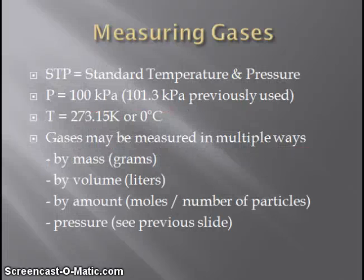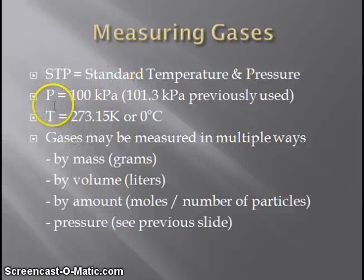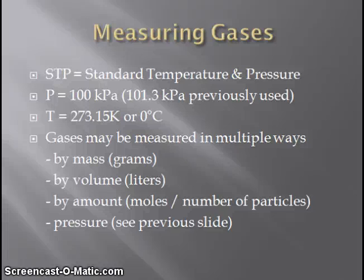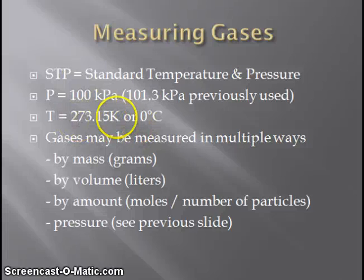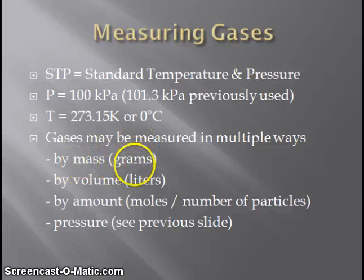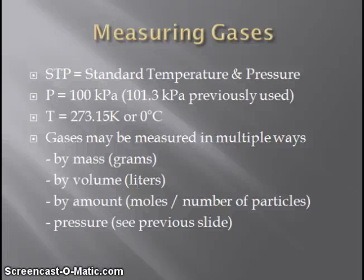All students should know what standard temperature and pressure, or STP, is. Standard pressure is 100 kilopascals — previously 101.3 kilopascals was used, but we should use 100 kilopascals. Standard temperature is 273.15 Kelvin, equivalent to zero degrees Celsius. Note that Kelvin temperatures do not use the degree symbol. Additional ways to measure gases include mass in grams, volume in liters or cubic meters or cubic centimeters, amount in moles or number of particles, and pressure as previously discussed.